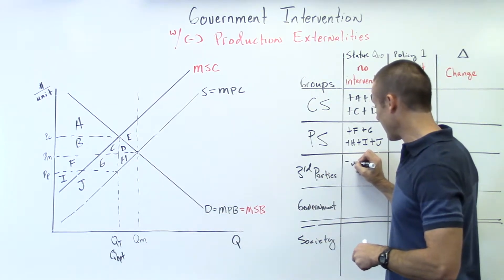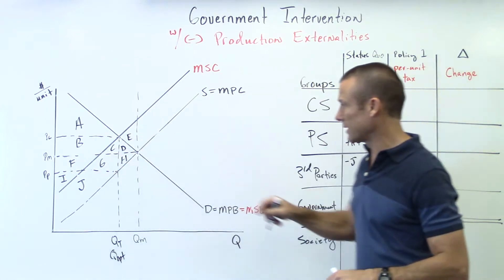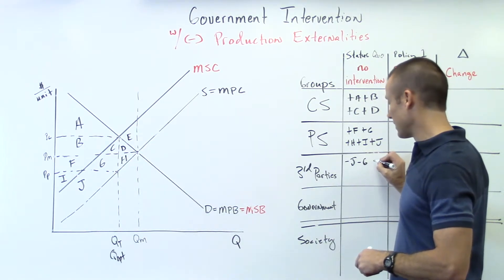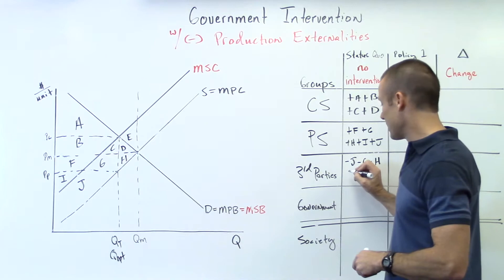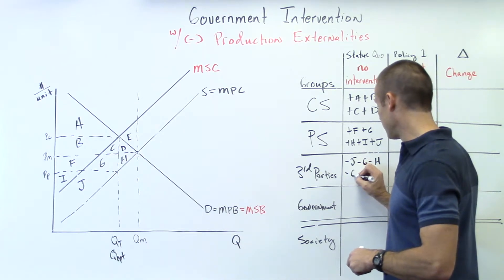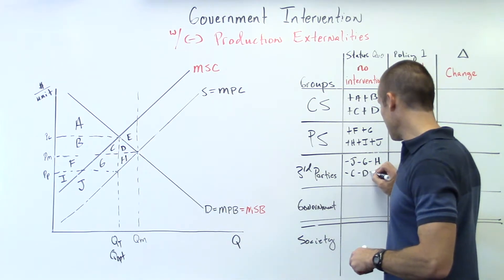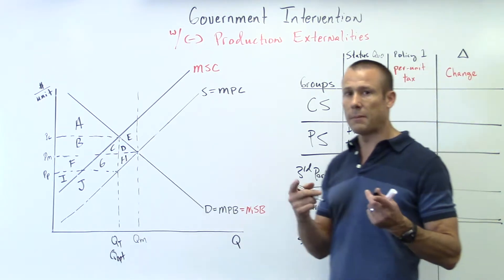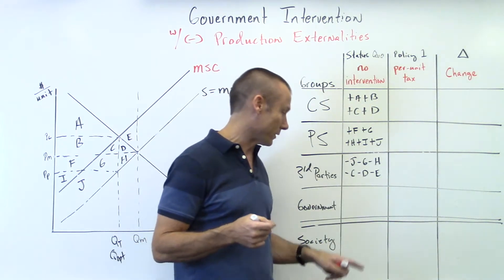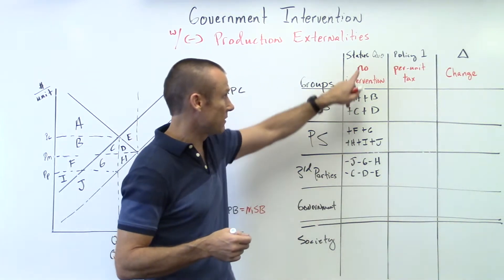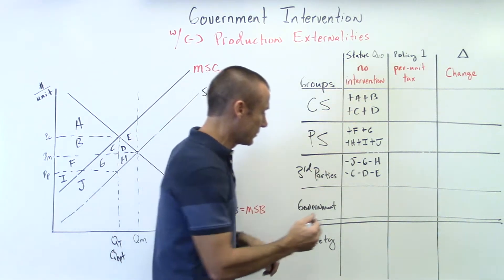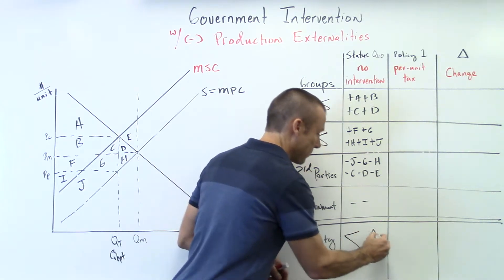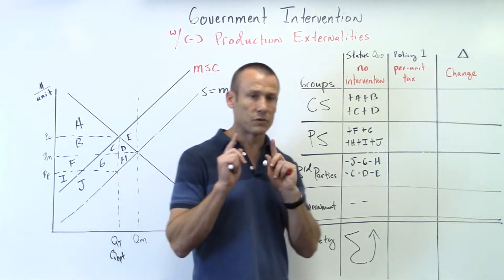So for third parties, starting from the bottom, that's negative J, negative I, negative H, negative G, negative F, negative E — all that negative for third parties. And the government? Well, that one goes really quickly. Government's not involved, no intervention — just a dash. And we've done the first column.